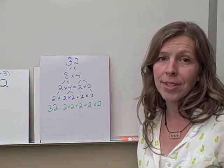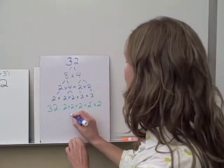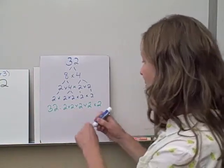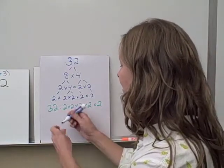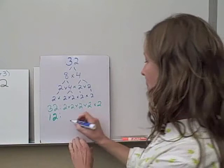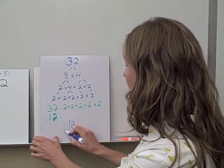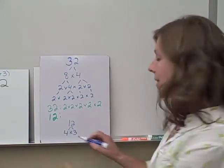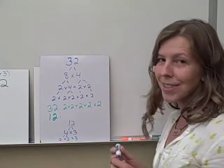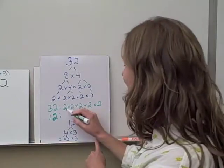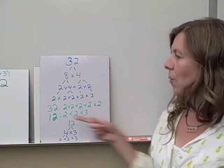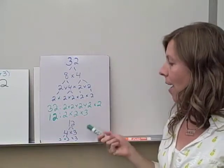We're also going to look at the prime factorization of 12. I bet this one you know really well. I'm going to move it down a little bit because we're going to compare the prime factorization of 32 and the prime factorization of 12. So 12 can be broken into 4 times 3. And then 4 will be broken into 2 times 2 times 3. I'm going to rewrite it in order from least to greatest. 2 times 2 times 3.